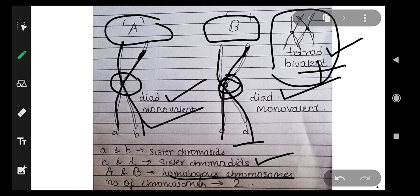So this is the concept. I hope it is clear: what is a dyad, what is a tetrad, what is a monovalent, and what is a bivalent.